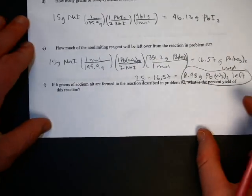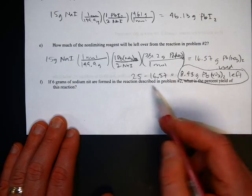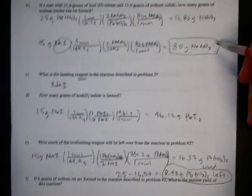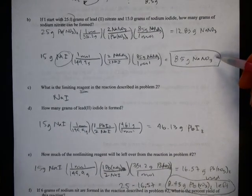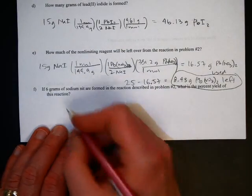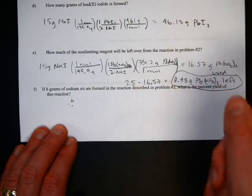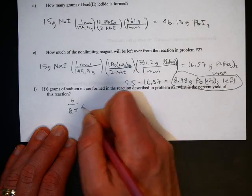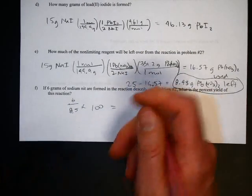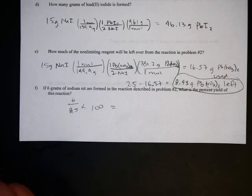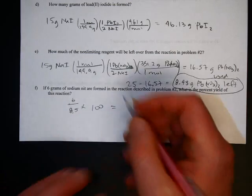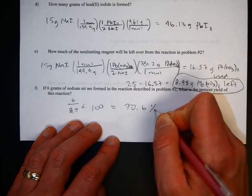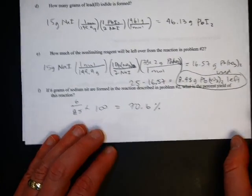Last one, it says if 6 grams of sodium nitrate are formed in the reaction described in problem 2, what's the percent yield of the reaction? Well, this is your theoretical yield, 8.5. So if you actually form 6 grams to find a percent, you just divide. 6 out of 8.5 times 100. And you got about 70.6 percent yield. That means that you made about 70.6 percent of what you're supposed to make.